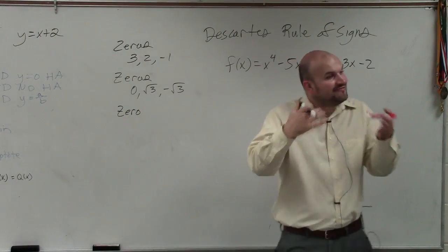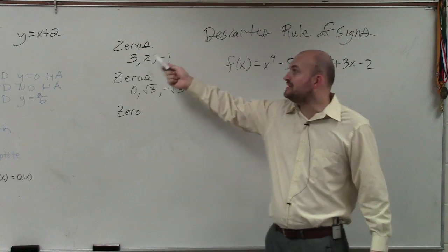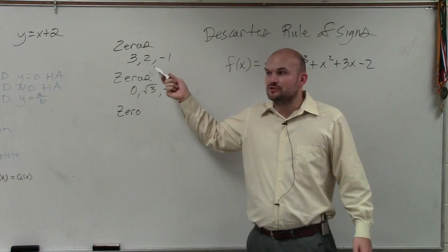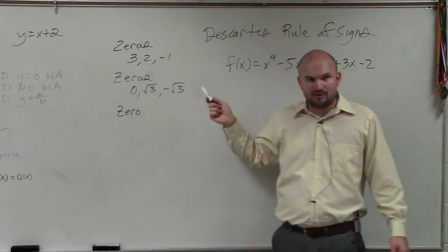So far, we have found and written polynomials when given zeros that were rational numbers. We have found and written polynomials when we were given zeros that were irrational numbers.